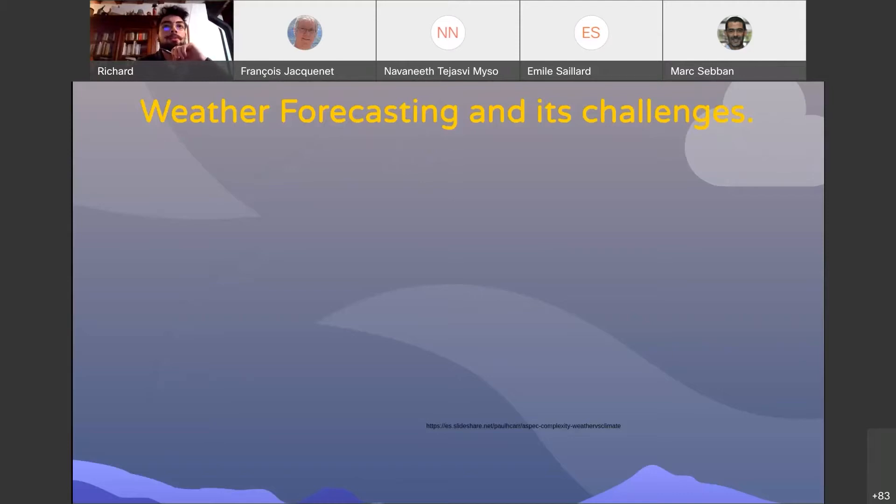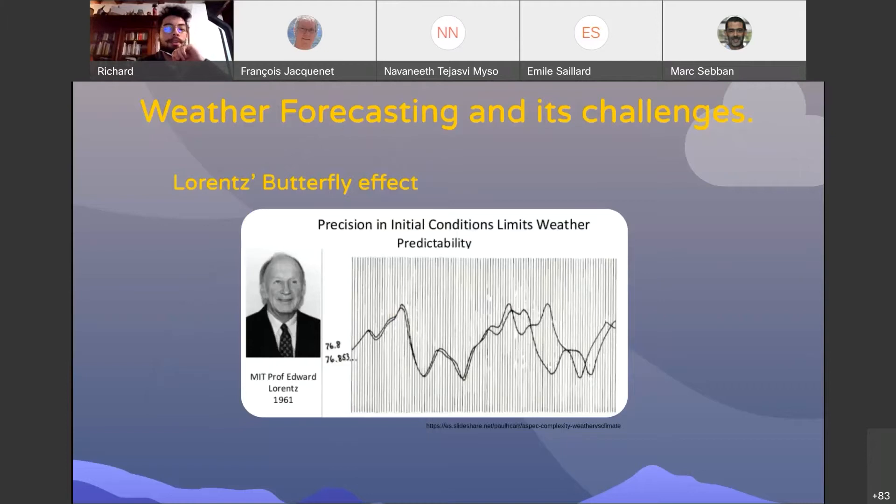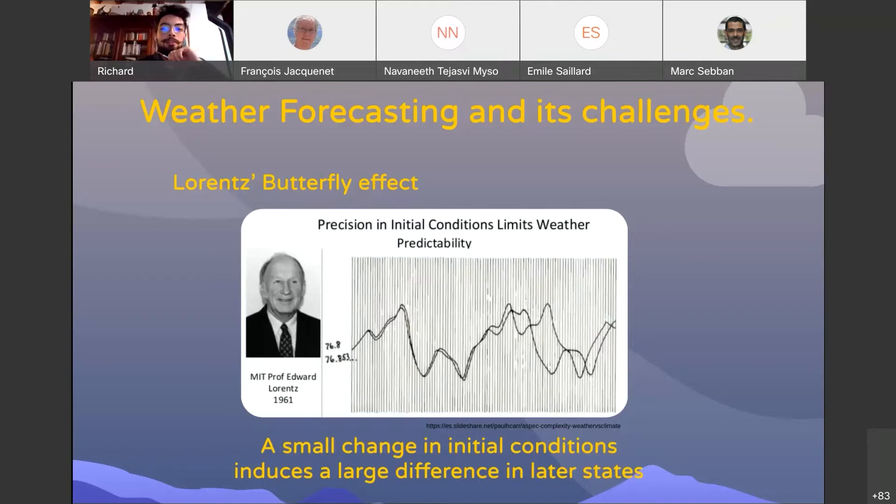So, why is weather forecasting a challenge? You may already know about Lorenz's butterfly effect that states that a small change in the initial conditions can induce a large difference in the later states. That's actually a good example of the chaos theory and that's why weather forecasting is so difficult.